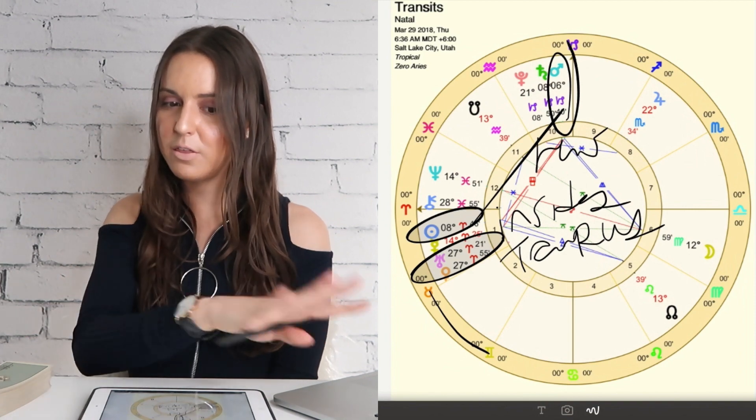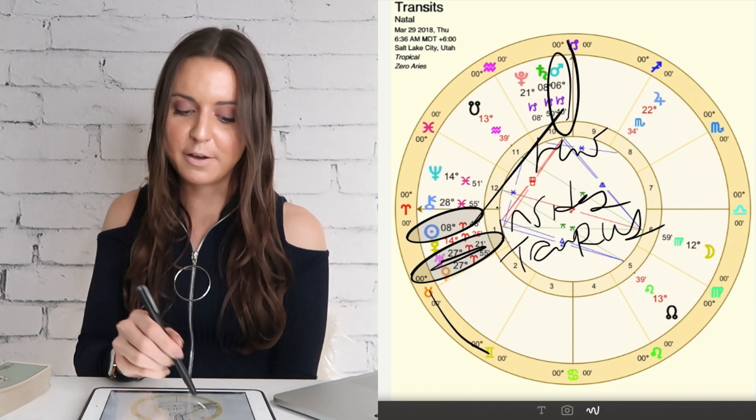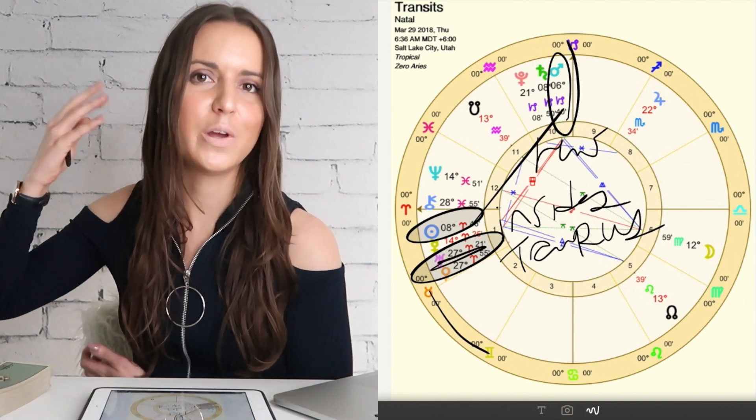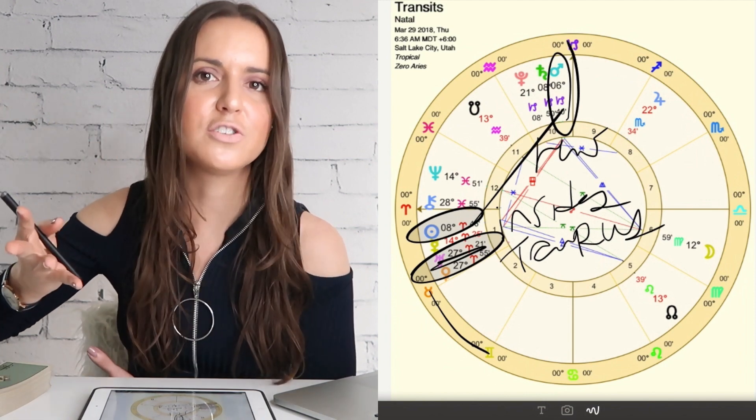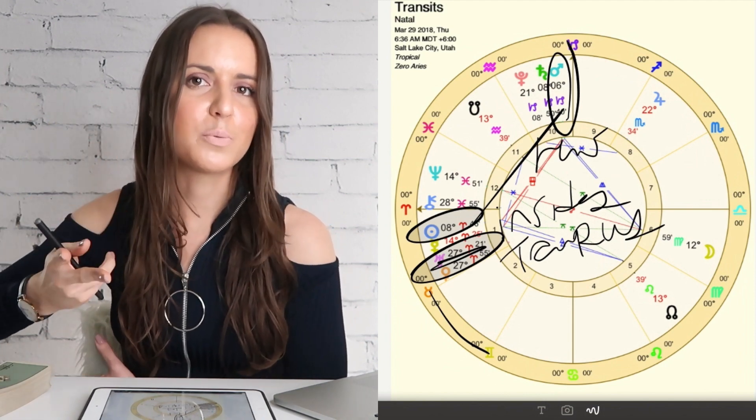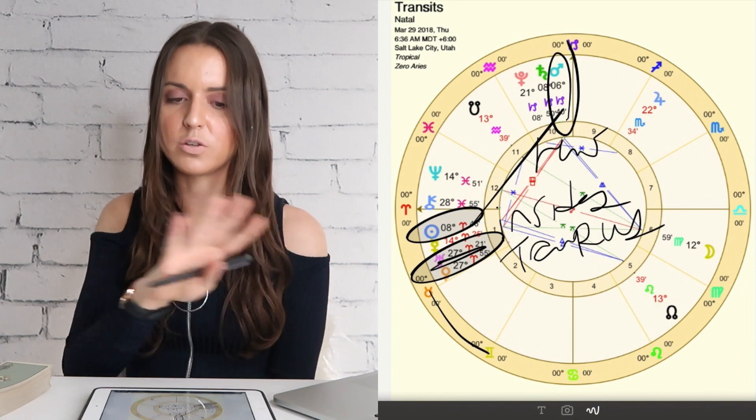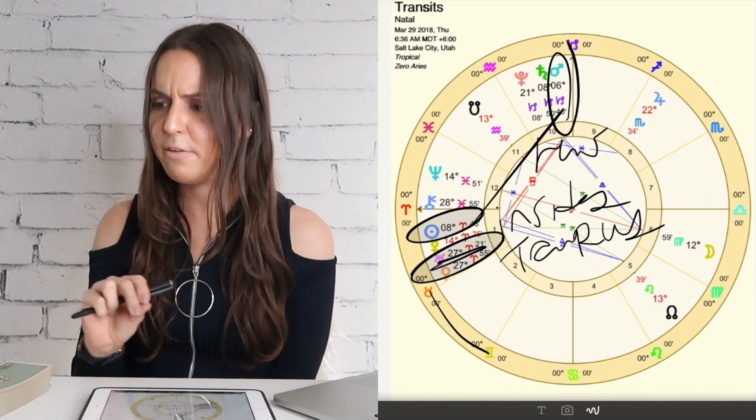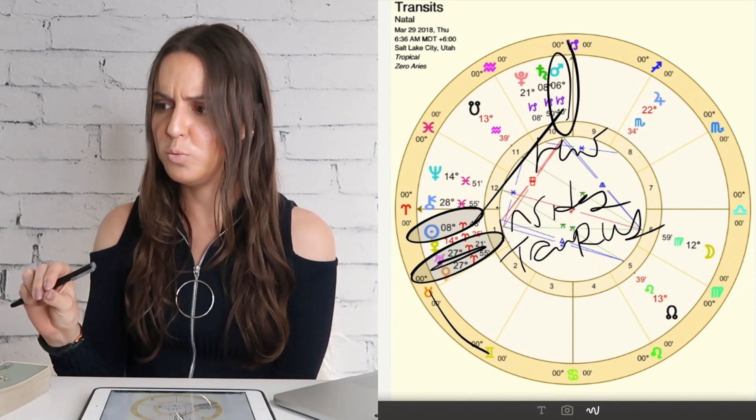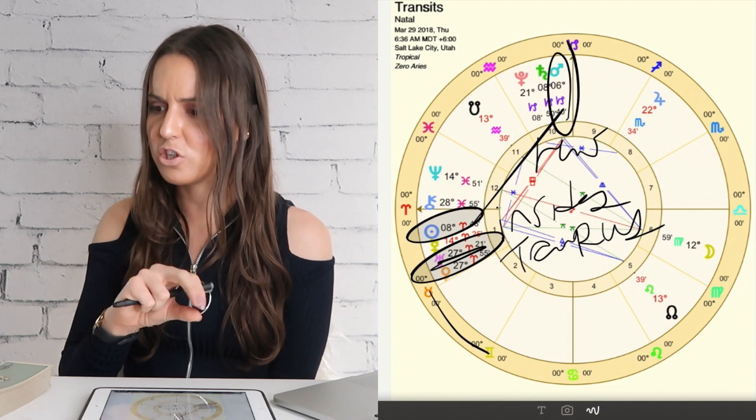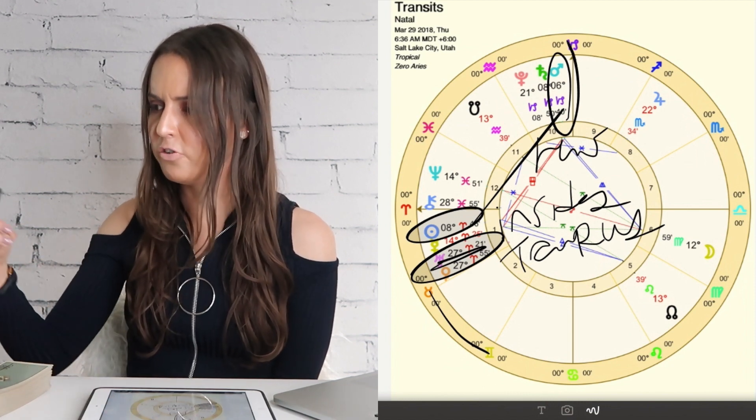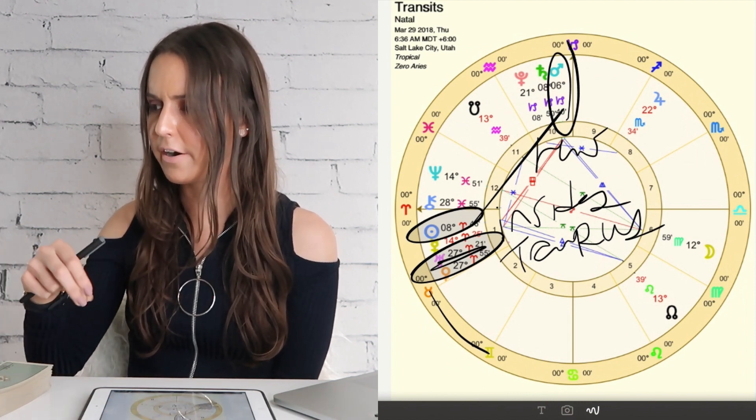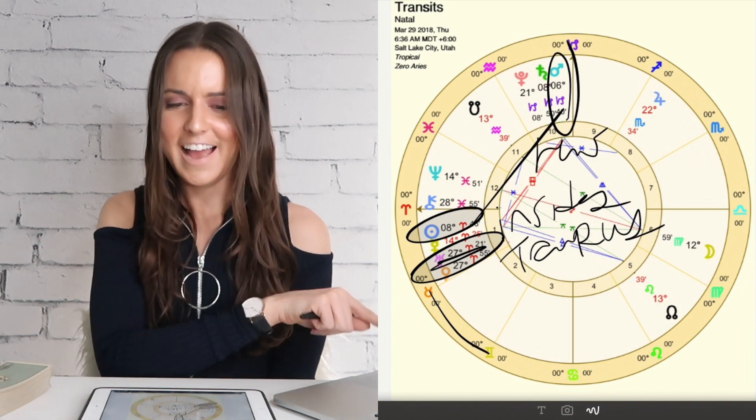And what that could bring up for sure is some unexpected things in regards to money, financial situation, or in regards to relationships coming in. Could be a little bit jarring because Venus is in Aries, does not like being in Aries. Also because Venus doesn't really like the planet Uranus either. So it definitely could bring up some unexpected things in regards to relationships. Maybe that are a little bit scary for you. You're a Taurus, so you're ruled by Venus. So this could especially be a big thing that comes up for you this week.